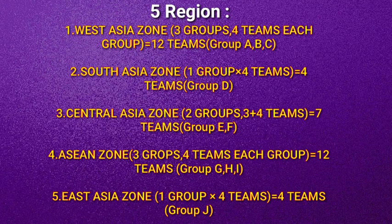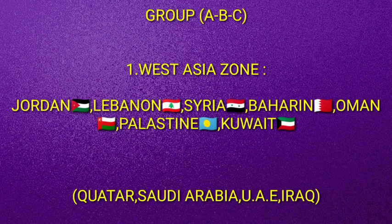From the Asian zone there will be three groups with four teams participating in each group, making 12 teams from groups G, H, and I. From East Asia zone there will be one group with four teams, and the group name for East Asia zone is Group J.